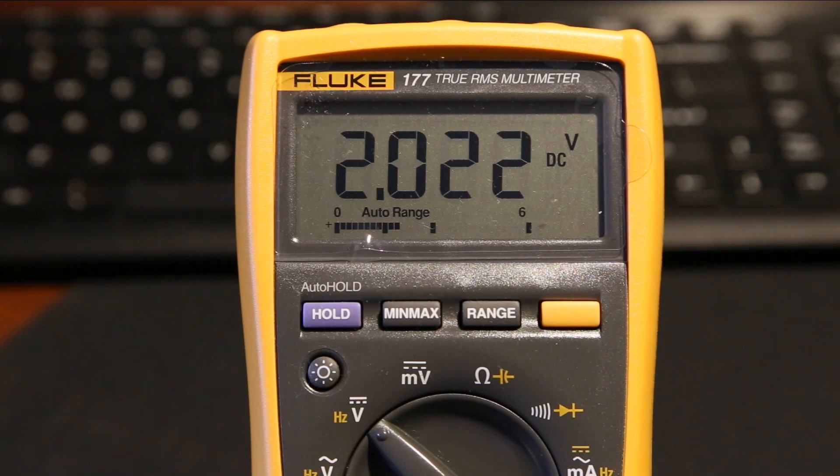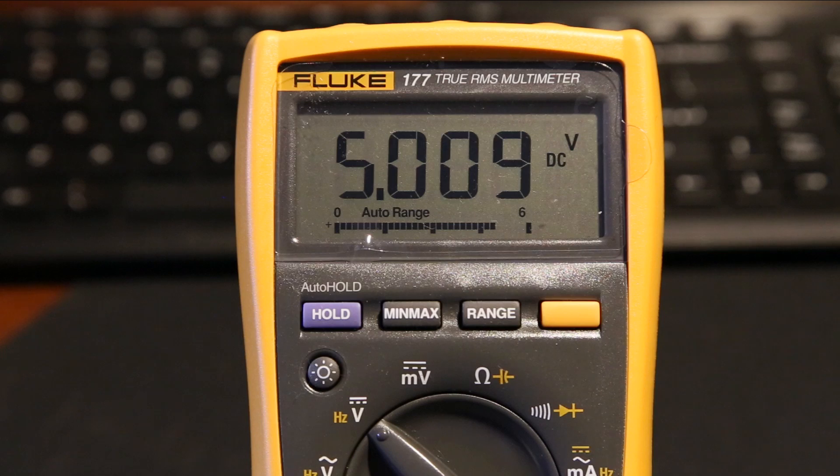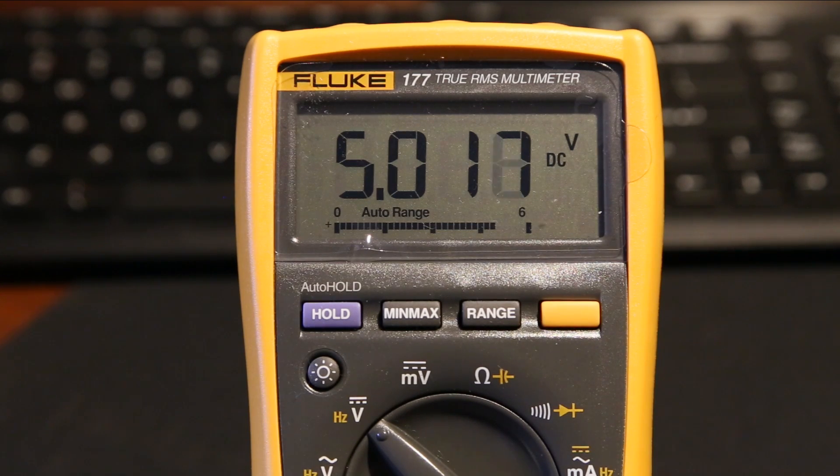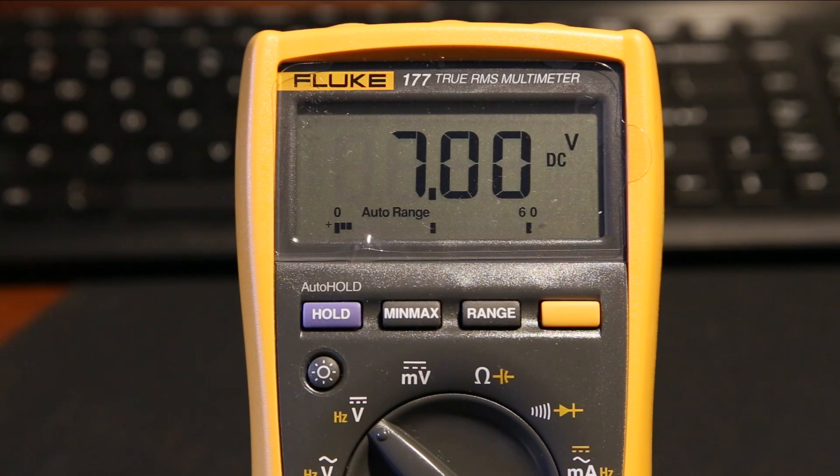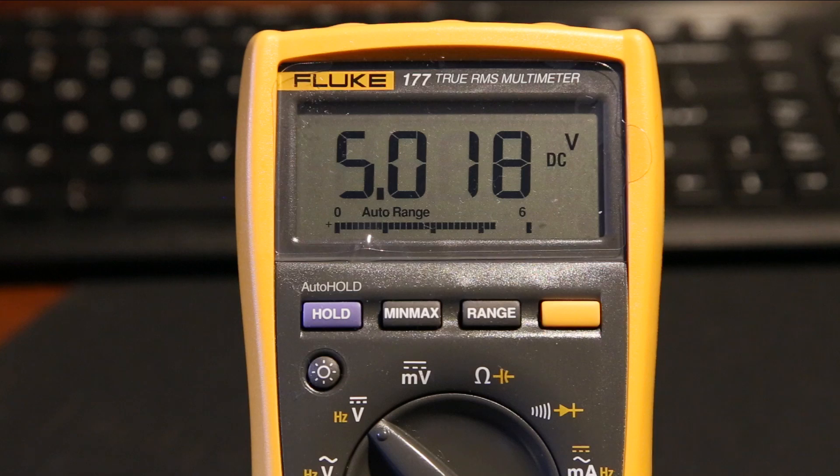I'm going to increase it to 2 volts, 3 volts, 4 volts, 5 volts. And we still have 3 decimal places at 5 volts, which is quite nice. That's unlike the Unity UT71A, which dropped off down to 2 decimal places at 2 volts. So let's go up 6 volts, 7 volts. Yeah, at 7 volts we dropped to 2 decimal places.